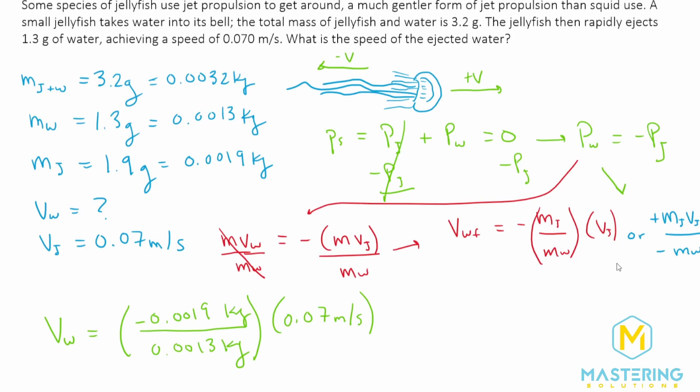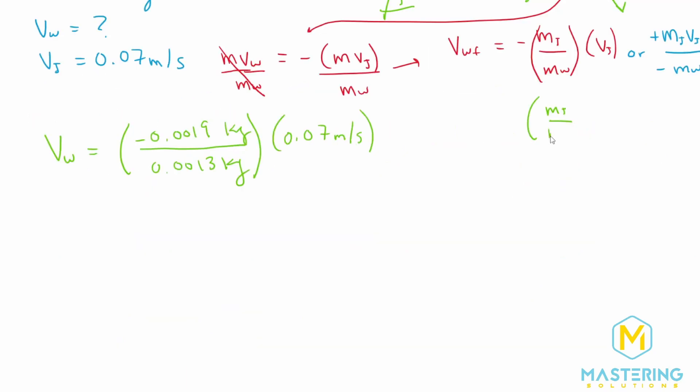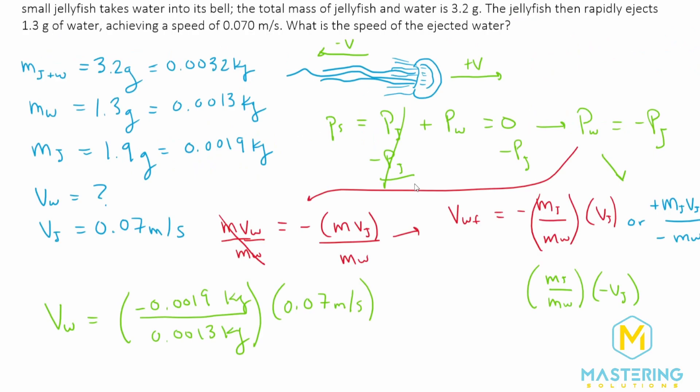So we could have written it this way. We could have written mass of the jelly divided by the mass of the water times the negative velocity. But the picture is helpful to help us conceptually understand that the answer should give us a negative velocity. So when we do everything, if we end up with positive, we may have done something incorrectly.